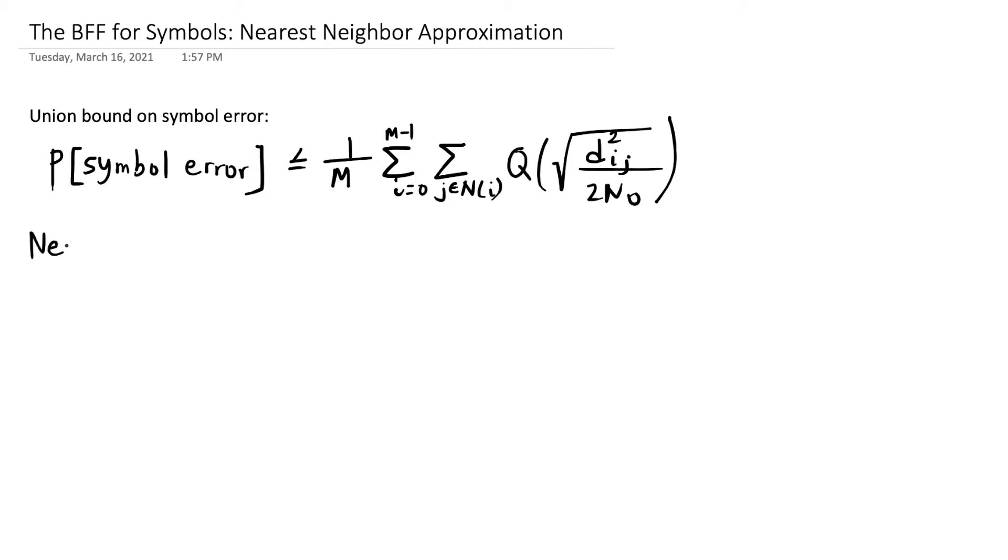The nearest neighbor approximation is going to give us an approximation that we can get to very quickly just by using the constellation and a few quick calculations. So what's the difference?